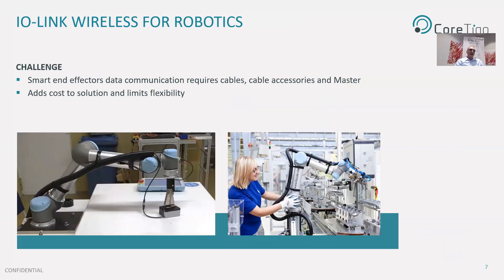Now let's focus on the use cases and applications in which IO-Link Wireless is used. On robots and collaborative robots, communication to the end effectors requires external cabling, cable mounting accessories, and also dedicated wired masters. Robots and cobots do not typically come equipped with the cables required for the end effectors. The deployment can be complex and not cost-effective, and it limits the motion and flexibility of the robotic arm, adding to the total payload.